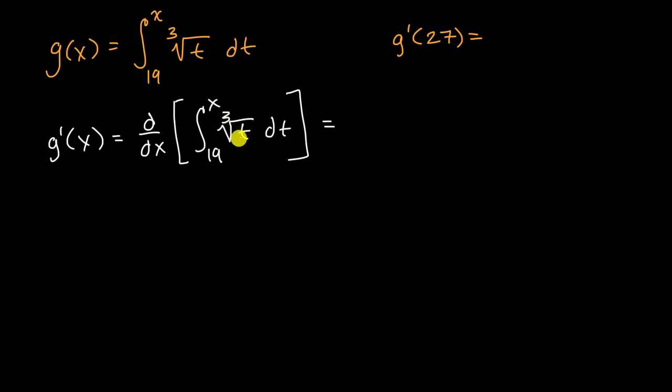with instead of t being the variable, it would now be x. So this is just going to be equal to the cube root of x.